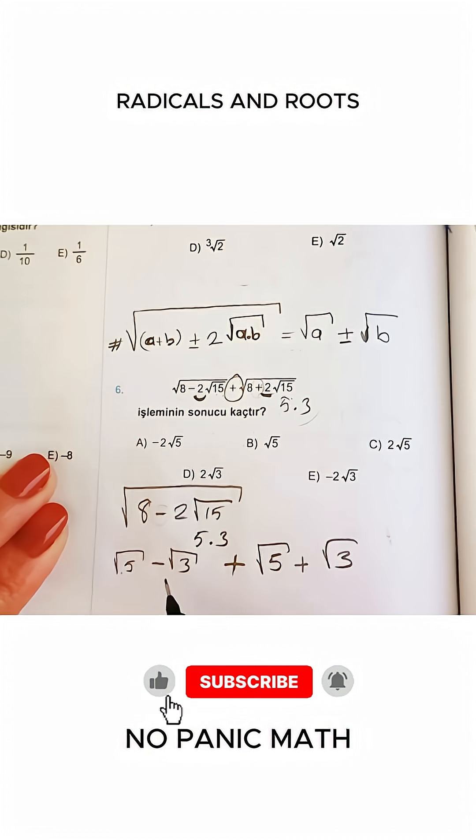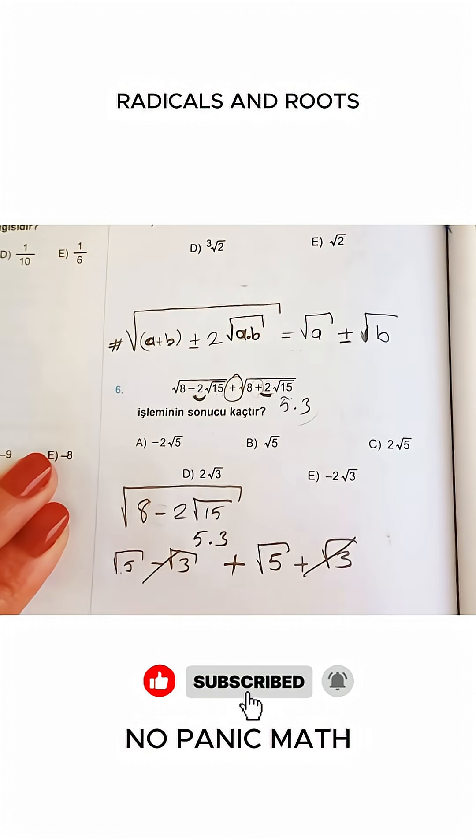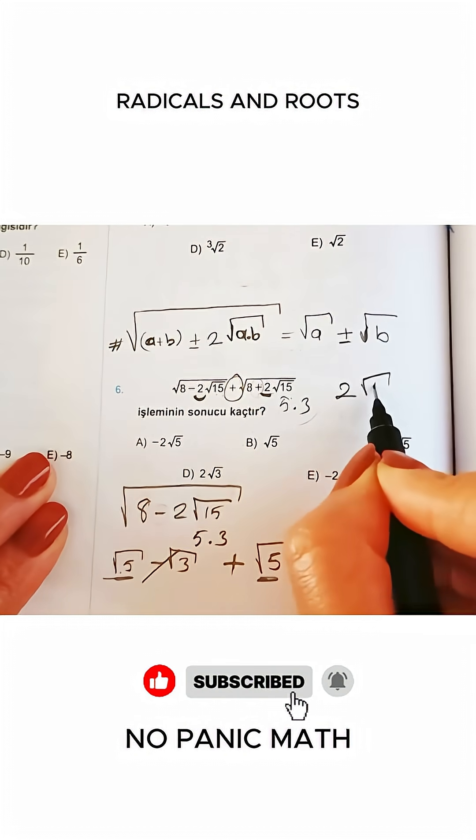The question is already finished. Negative root 3 and positive root 3 cancel each other out. There are two square roots of 5 here, so our answer will be 2 root 5.